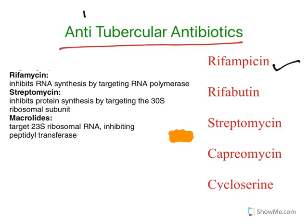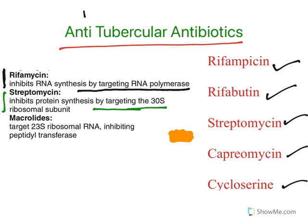Anti-tubercular antibiotics include rifampicin, rifabutin, streptomycin, capreomycin, and cycloserine. Rifamycins inhibit RNA synthesis by targeting RNA polymerase. Streptomycin is a protein synthesis inhibitor targeting the 30S ribosomal subunit. Capreomycin is also a protein synthesis inhibitor, and cycloserine inhibits the bacterial cell wall.